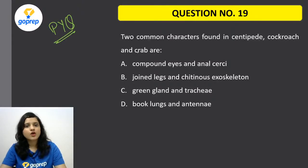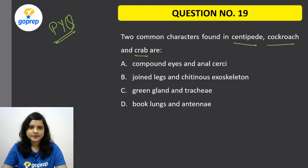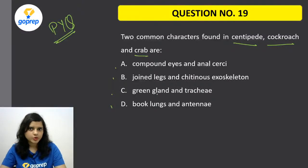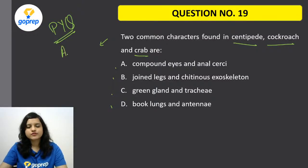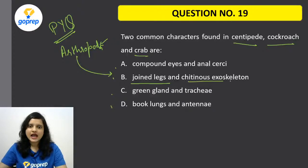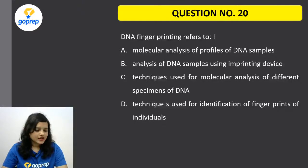We are quickly revising previous year questions. Question number 19: Two common characters found in centipede, cockroach, and crab — which option applies without exception? These organisms are from phylum Arthropoda. In Arthropoda you find jointed legs and chitinous exoskeleton. So the correct option is B.